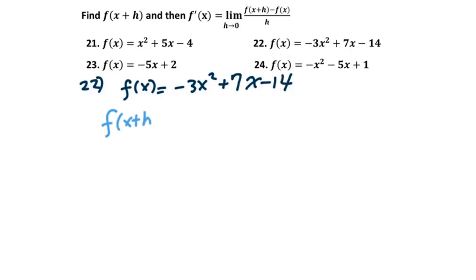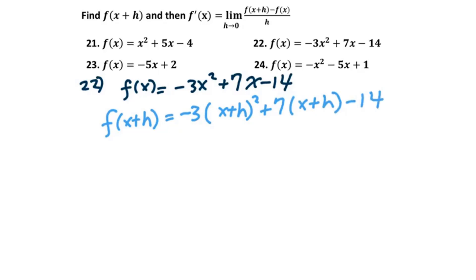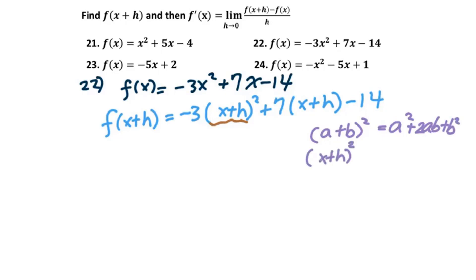Then f(x + h): change every single x into x + h. We get -3(x + h)² + 7(x + h) - 14. First, we need to expand (x + h)². We know (a + b)² = a² + 2ab + b². Therefore, (x + h)² = x² + 2hx + h².